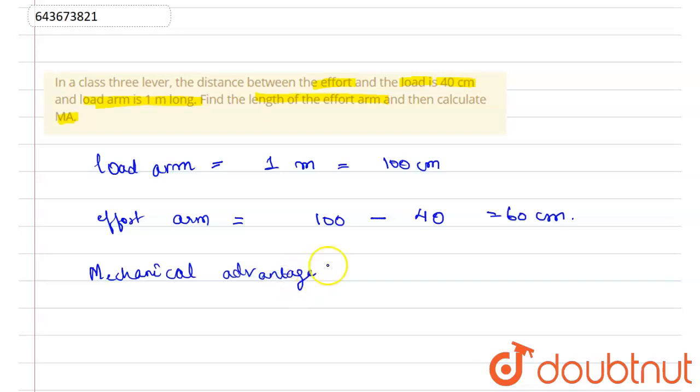Now the mechanical advantage will be effort arm upon load arm, so this will be equal to 60 upon 40, which equals 3 upon 2, which is 1.5. So the desired answers are: effort arm is 0.6 meters and MA is 1.5.